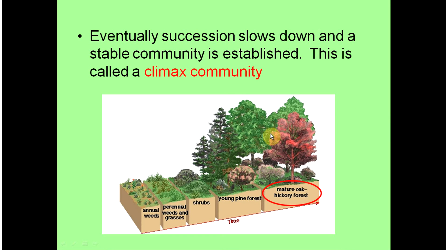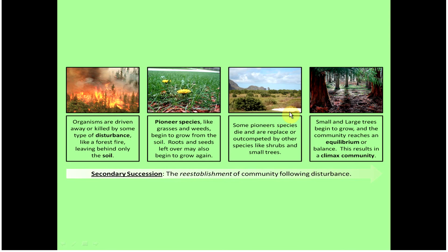Oftentimes, the climax community does not get replaced until we have some sort of major disaster that kills it off. Just another image of secondary succession after a forest fire — we do have to have pioneer species come in. They're not always mosses and lichens; if you have enough of a soil layer, you can get grasses and weeds. Usually those pioneer species get out-competed by other species that are a little bit larger, and that's how they get replaced — those larger species will compete with them for resources and win.